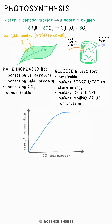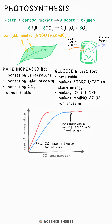A graph might look like this. Before the graph plateaus and levels out, the variable on the x-axis has to be the limiting factor. After it plateaus, it isn't — it must be one of the other two instead. If you have two lines, for example at different temperatures, then temperature must be a limiting factor.